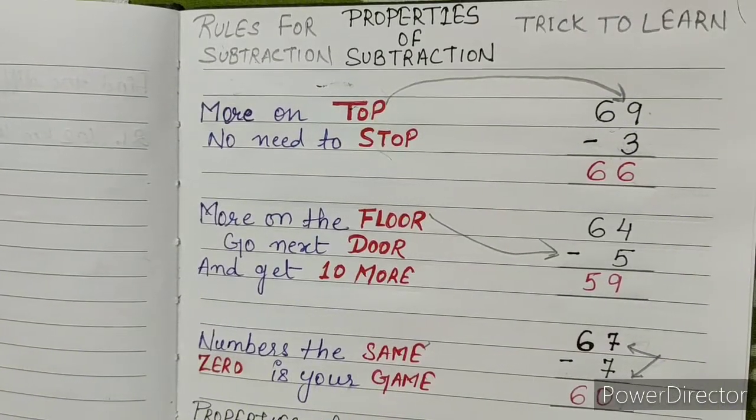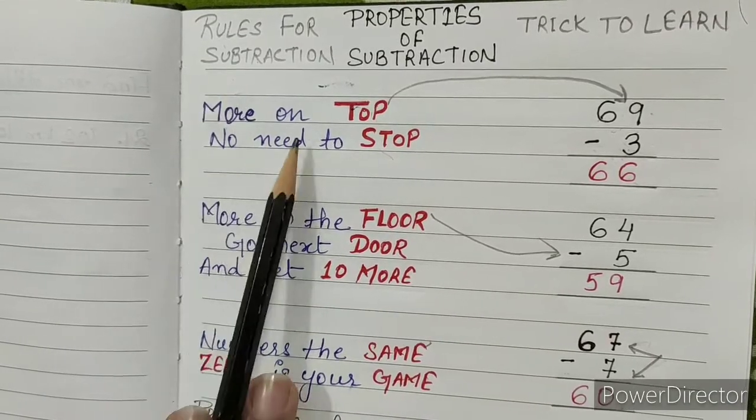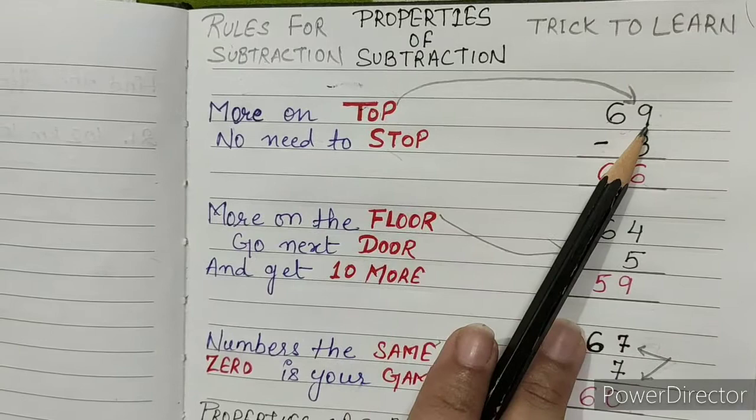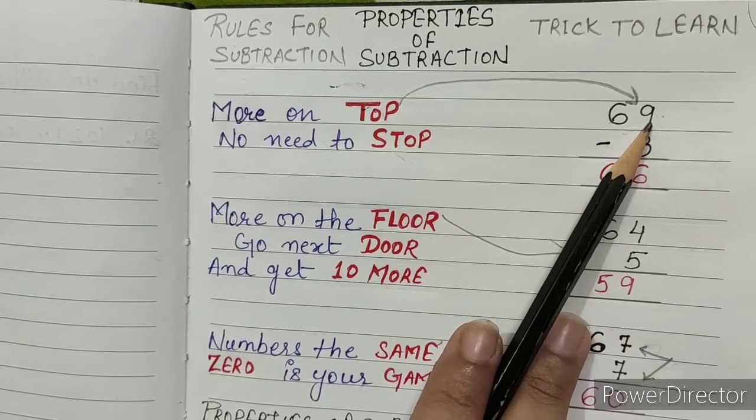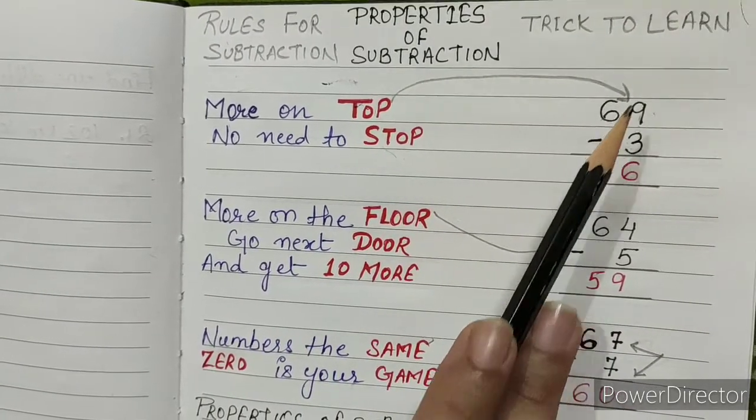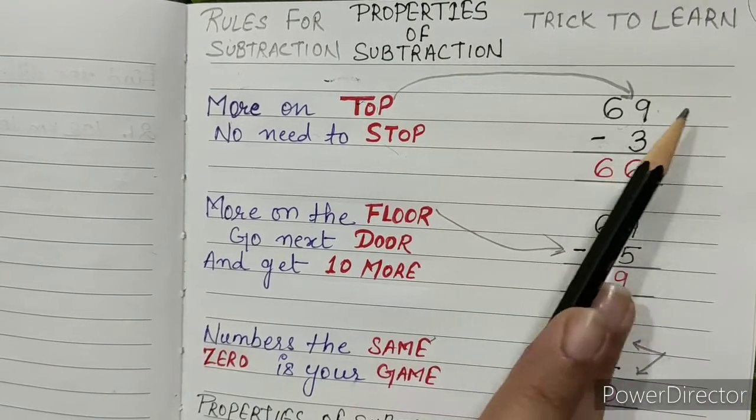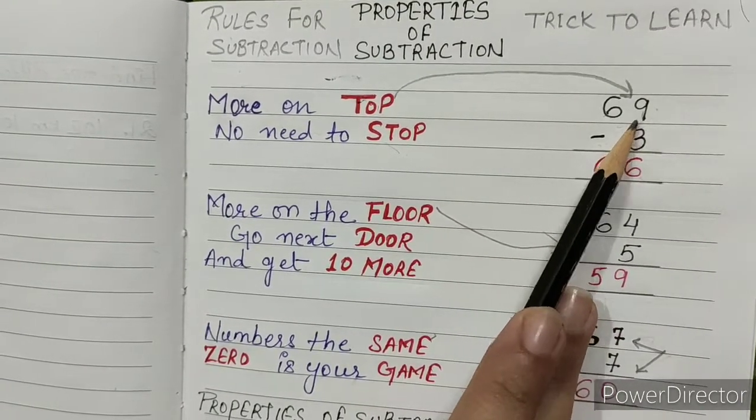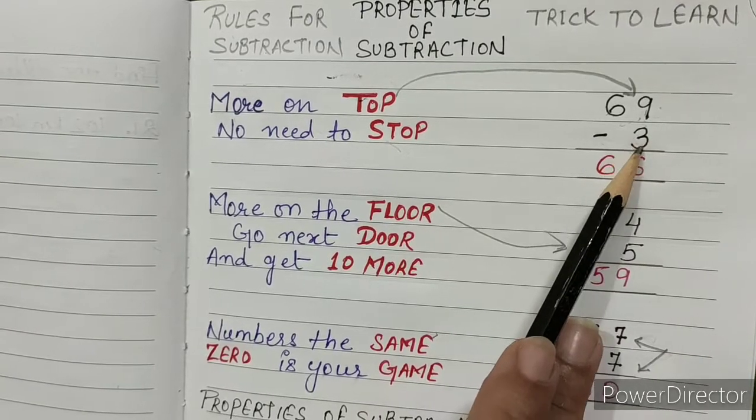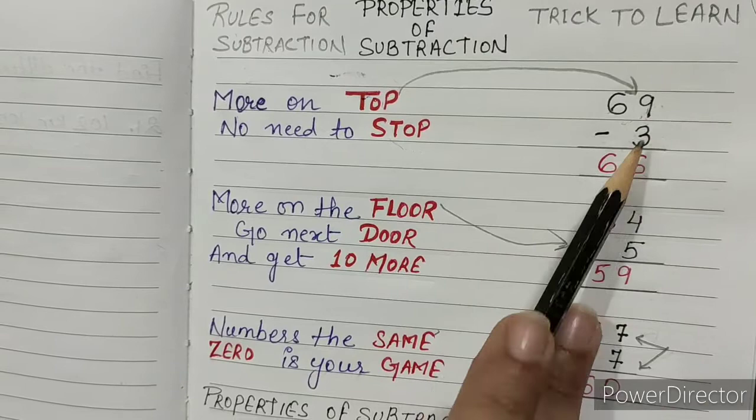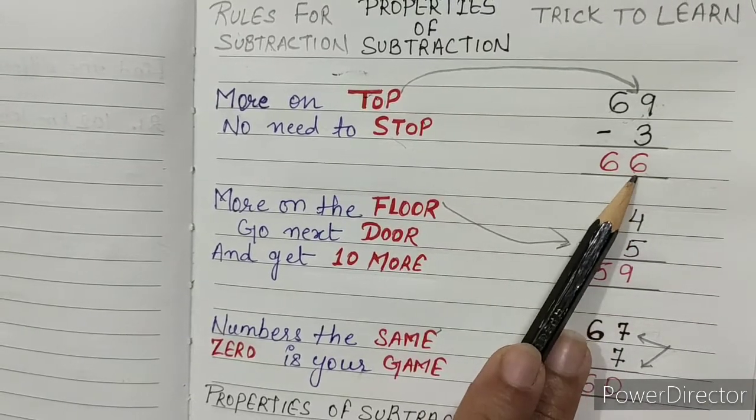Rules for subtraction. Rule 1: More on top, no need to stop. In 69 minus 3, 9 is on top and 3 is on the bottom. Since 3 is smaller than 9, we can subtract directly. 9 minus 3 is 6, giving us 66.